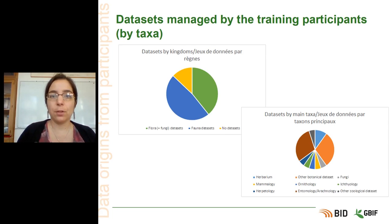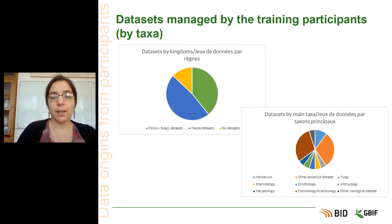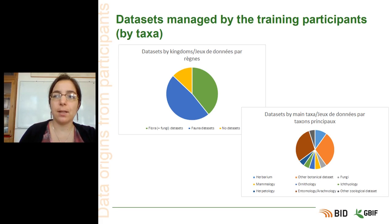Going further into detail about these datasets, we can see that a lot of them were botanical datasets or entomology and arachnology datasets. The rest of them were herbaria, mammalogy, herpetology, ornithology, fungi, ichthyology, and other zoological datasets.